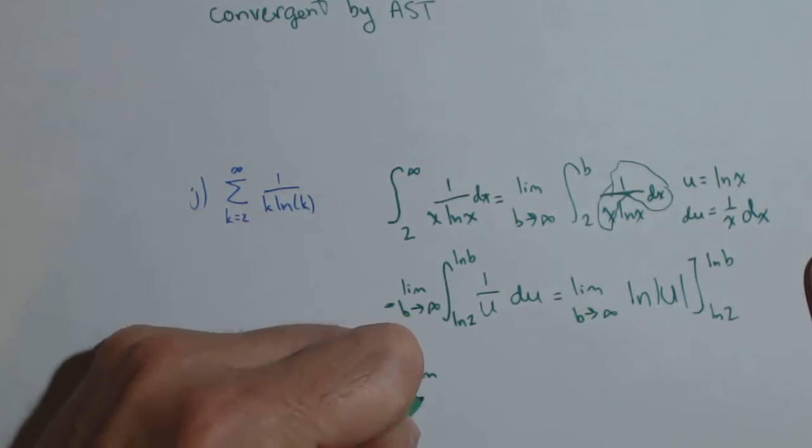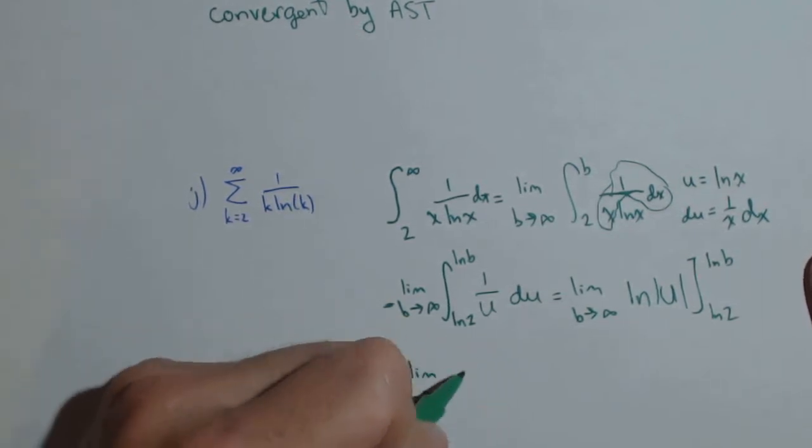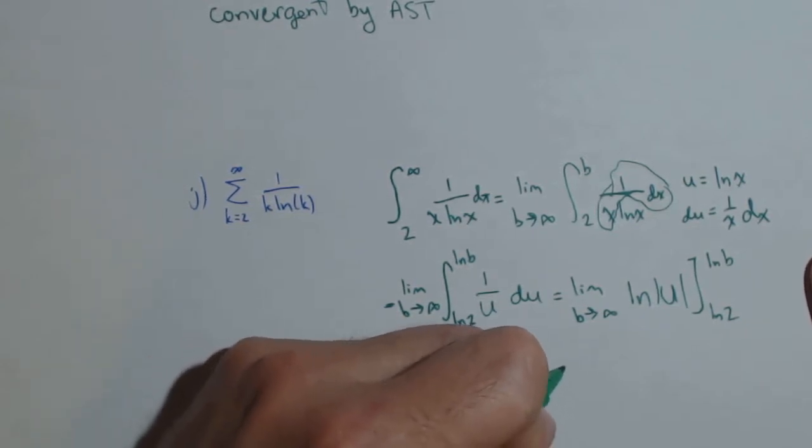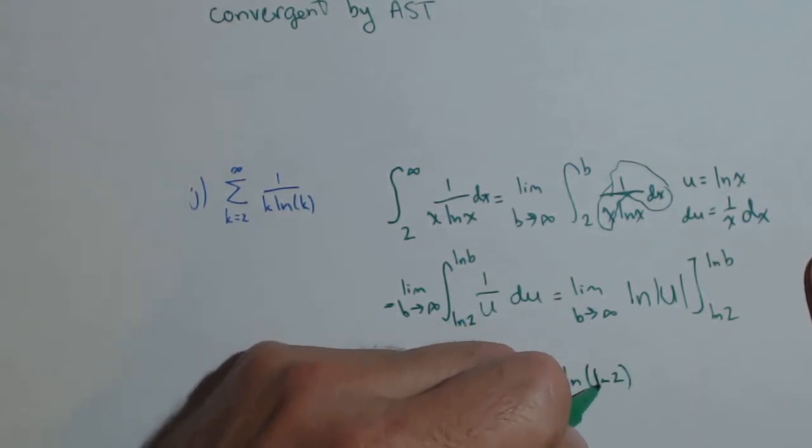Almost there. Limit as b goes to infinity of the natural log of the natural log of b minus the natural log of the natural log of 2, which is just a number.